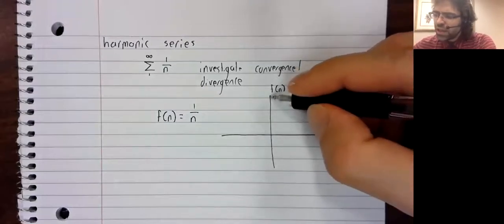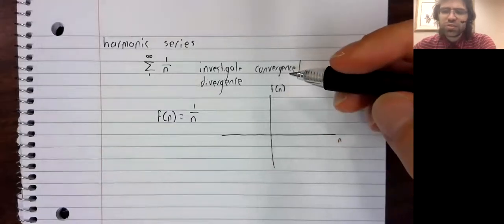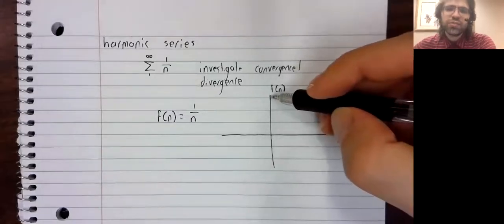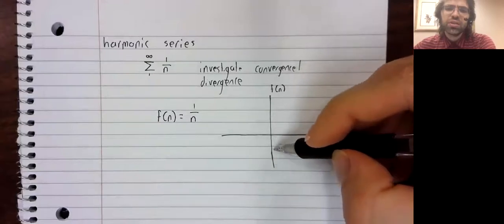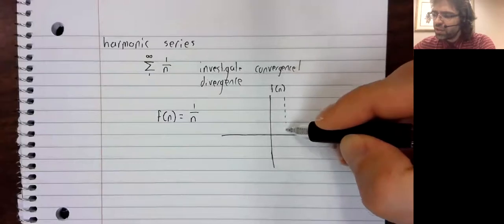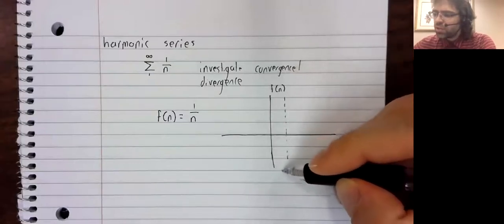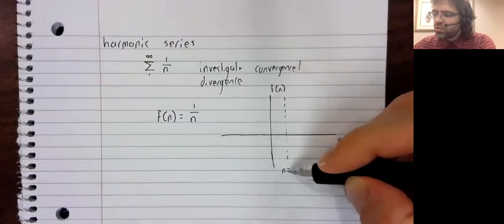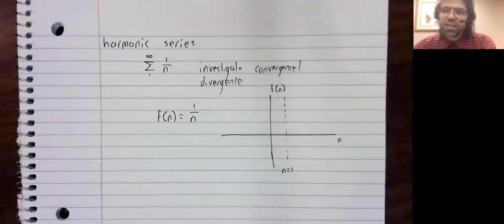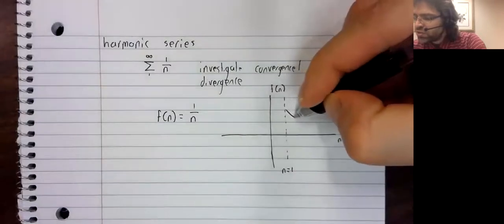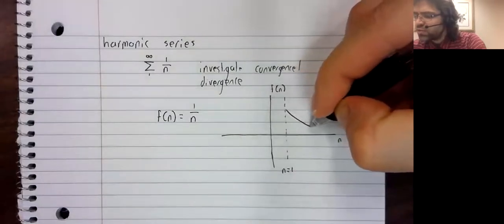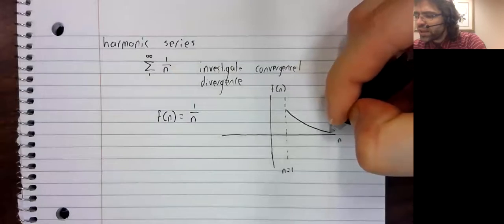Not everywhere. It's not continuous at this axis because it's undefined here. But starting at one, let's say, this function is continuous, decreasing, and positive.